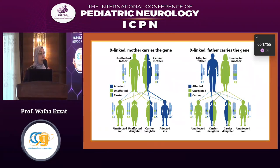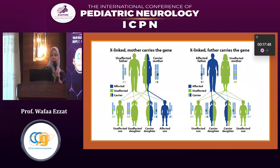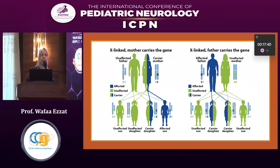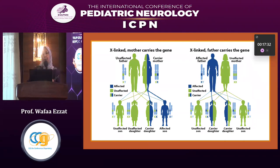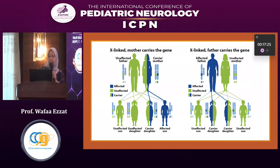This is how the inheritance occurs. It is an X-linked disease. When the mother is a carrier of the affected gene, there will be a 50% chance of an affected son, 50% chance of an affected daughter, and 50% unaffected children. When the father carries the affected gene, 50% of the daughters will be affected and the sons will be unaffected.